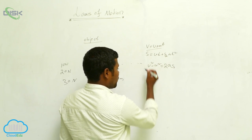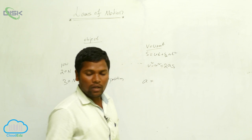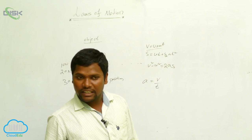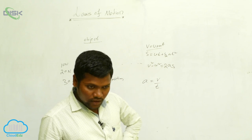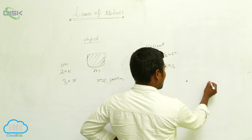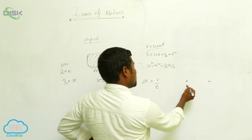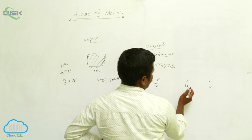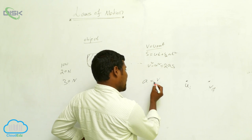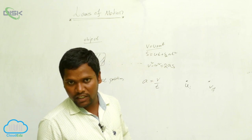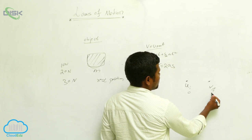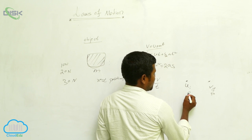What is the first equation v = u + at? We already know the acceleration formula: acceleration equals change in velocity divided by time. In general, we consider two velocities — initial velocity u and final velocity v. For example, if initial velocity is 20 and final velocity is 50, the change in velocity is 50 minus 20, which is 30.